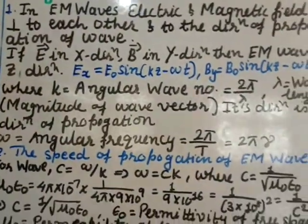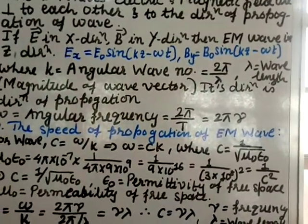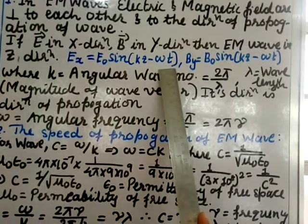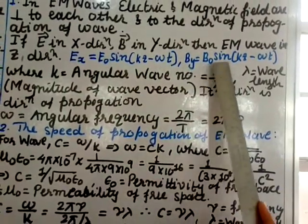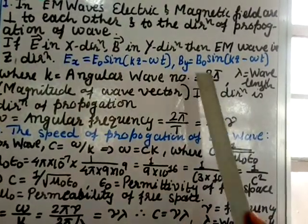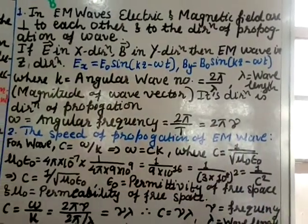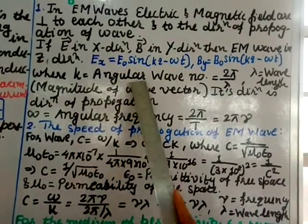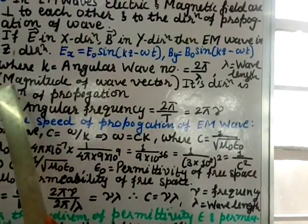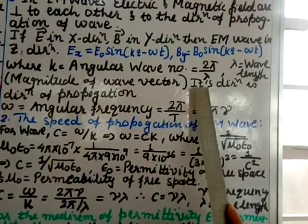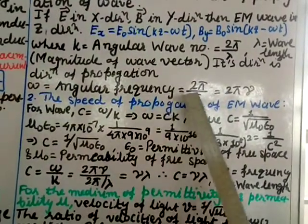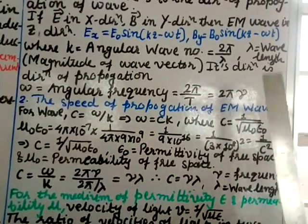The wave equations for electric and magnetic fields are: Ex = E₀ sin(Kz − ωt) and By = B₀ sin(Kz − ωt), where B₀ and E₀ are the amplitudes of the magnetic and electric fields respectively. K is the angular wave number given by 2π/λ, where λ is the wavelength — also called the magnitude of the wave vector, whose direction is the direction of propagation. ω is the angular frequency given by 2π/T or 2πν.